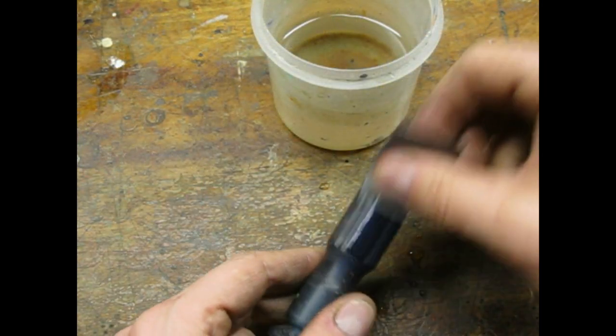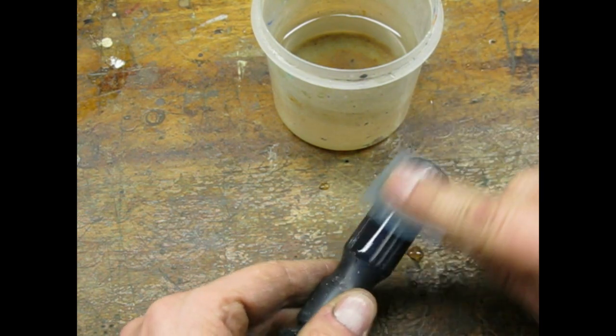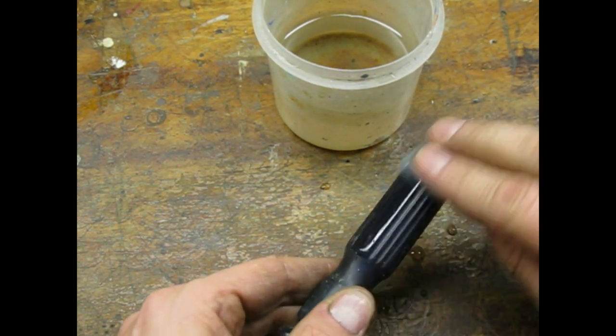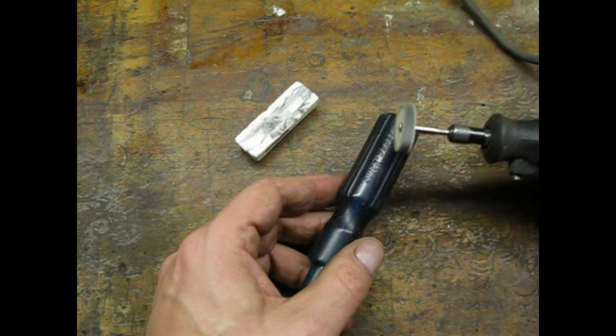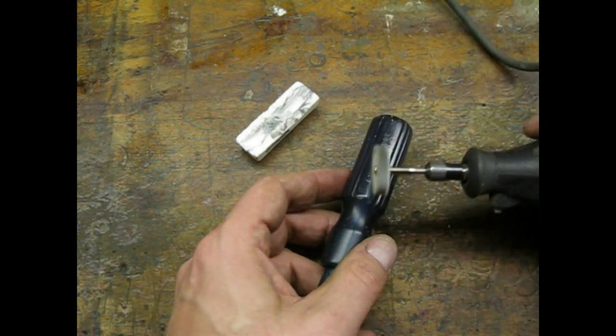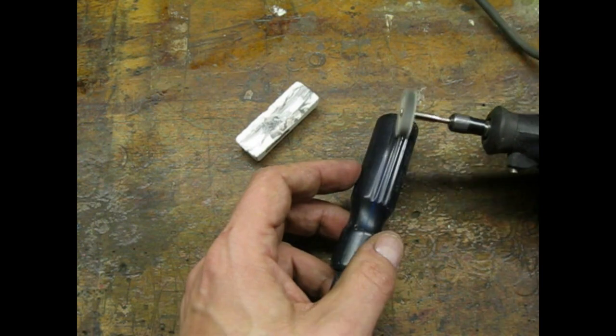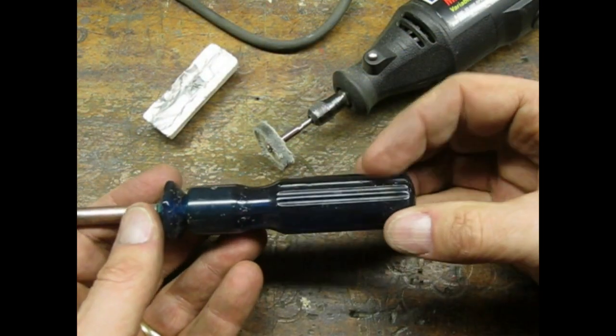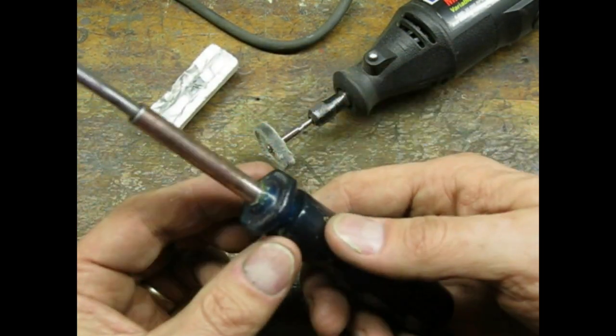I went ahead with the 3000 grit and the Dremel polishing anyway. Considering what I started with, the handle turned out okay.